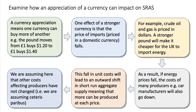One effect of a stronger currency is that the price of imports, when priced in the domestic currency, goes down. The dollar price might stay the same, but once you divide into pounds, the price of imports in pounds goes down. For example, crude oil and gas is priced in US dollars, so a stronger pound would make it cheaper for the UK to import energy.